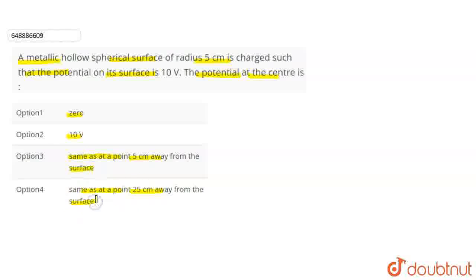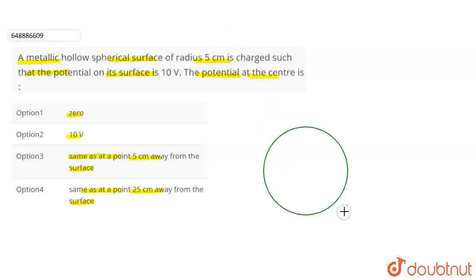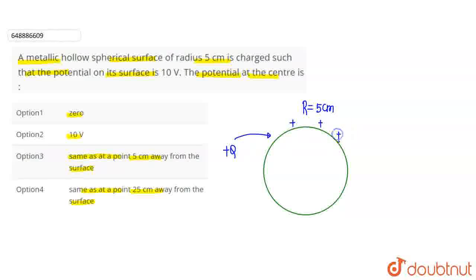Here we have a hollow spherical surface which has a radius of 5 cm. If I place a plus charge on it, because the surface is hollow, the full charge goes to the outer surface. It is equally distributed — this is a uniform distribution of charge.